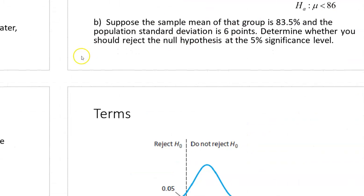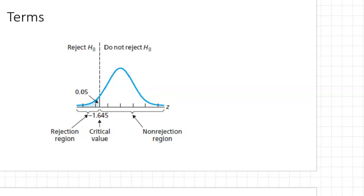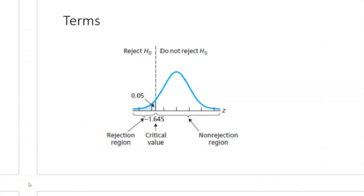Here's a picture showing the separation between reject and do-not-reject regions. Using the same number, negative 1.645: if our test statistic is less than that — which it was — then we reject the null hypothesis. There is enough evidence for the alternative hypothesis. In this case, rejecting the null means there's enough evidence to suggest the average grade in the class is actually less than 86.